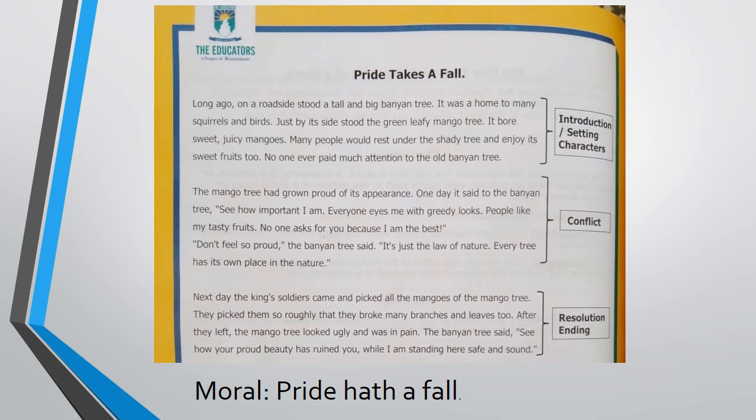The next day the king's soldiers came and picked all the mangoes from the mango tree. They picked them so roughly that they broke many branches and leaves too. After they left, the mango tree looked ugly and was in pain. The banyan tree said, 'See how your proud beauty has ruined you, while I am standing here safe and sound. Pride hath a fall.'